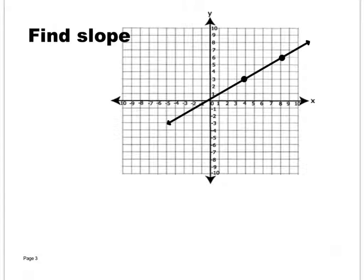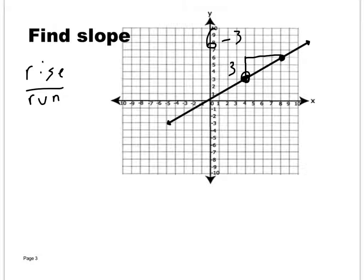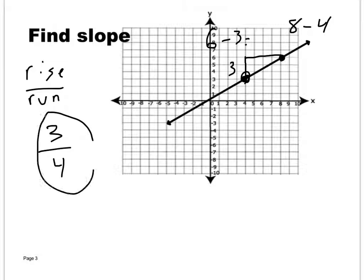Let's find the slope of this line. Slope is always rise over run. Always go to the right for run — start at the left point and go to the right point. How far up did this go? It started at three and went to six, so six minus three is three. Your rise was three. How far to the right did it go? It went over four — you started at the final value of eight and subtract the original four: eight minus four is four. So the slope of this line is three over four.